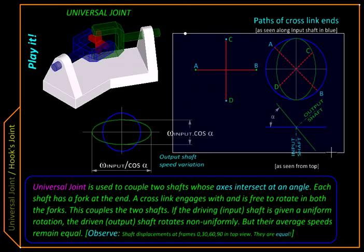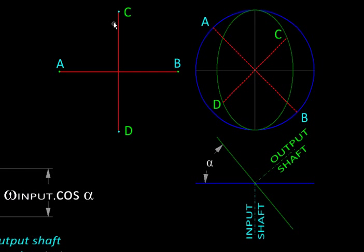For that, we are going to name the endpoints of the cross link as A and B engaging with the input fork, and C and D engaging with the output fork. If we look along the input shaft, then